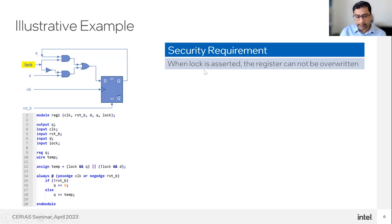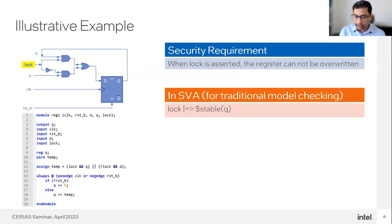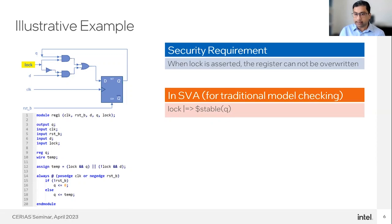This is the Verilog code snippet for this diagram. Our security requirement is to verify that when the lock bit is asserted, the register cannot be overwritten. If I want to verify this security requirement, I have several options. One traditional approach is to represent this requirement in System Verilog Assertion — for example, 'lock implies $stable(Q)'. The $stable primitive specifies that signal Q remains stable over clock cycles, meaning its value does not change when lock is set. I can then apply assertion-based simulation or a formal verification tool.